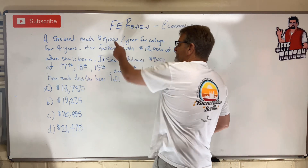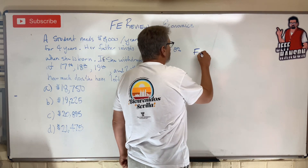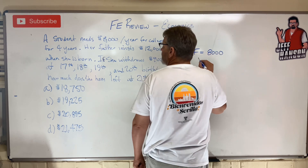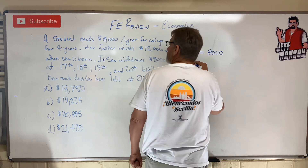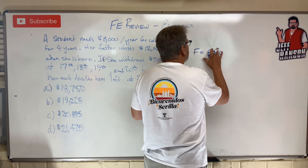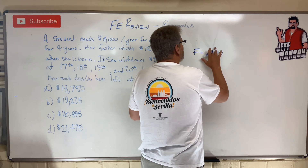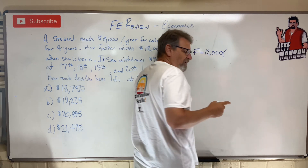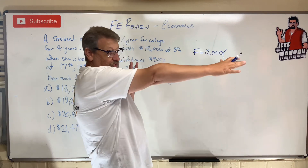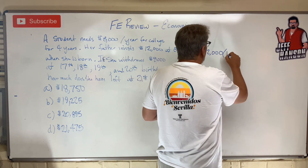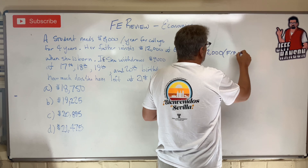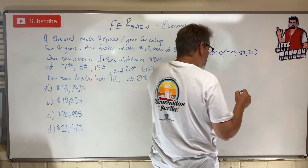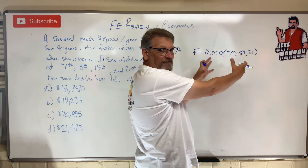Let's put that money in the bank and see what happens to it. F is equal to present value — $12,000, not $8,000. He invested $12,000. For how long? Let's put it in there for the whole thing — 21 years. That would be F given P, 8%, 21 years. That's going to give me the total future amount of that money.